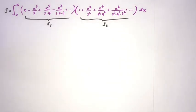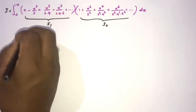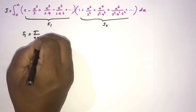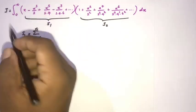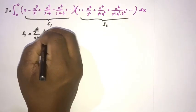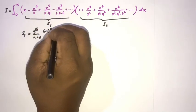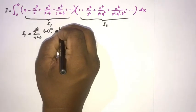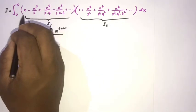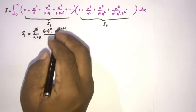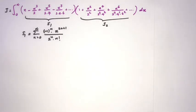Let's represent S1 using sigma notation. We can write S1 as the sum from zero to infinity. Since we have alternating signs (plus, minus, plus, minus), we write (-1)^n. The numerator has 1, 3, 5, 7, ... which is x^(2n+1), and the denominator is 2·4, 2·4·6, giving us 2^n times n factorial.